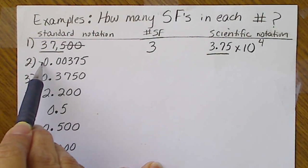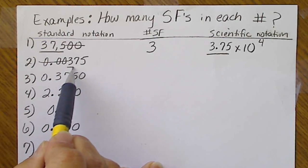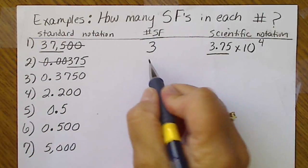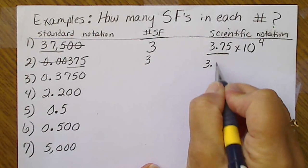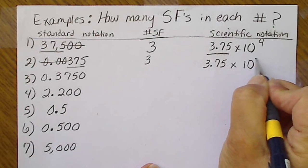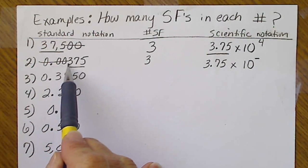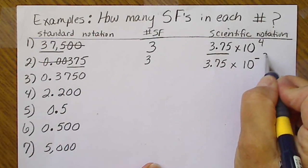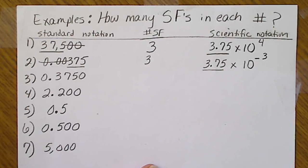We always cross out all the zeros at the beginning of a number. So again, this number has three significant figures. And in scientific notation, it's also 3.75 times 10. And this number's going to be a negative power because the number's little. 1, 2, 3. So this is 10 to the negative third. And once again, the three significant figures show up.